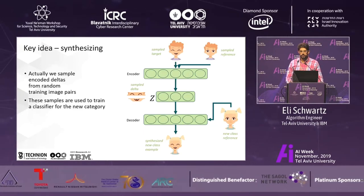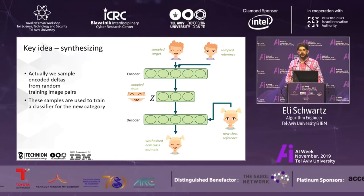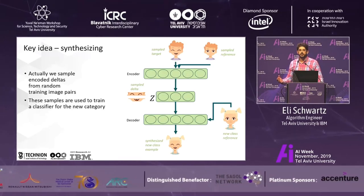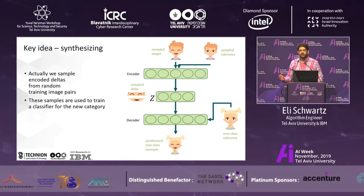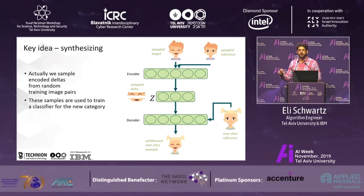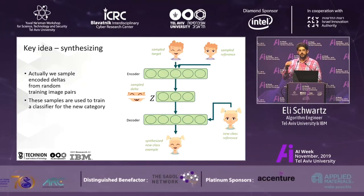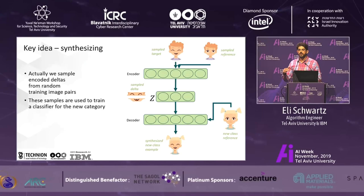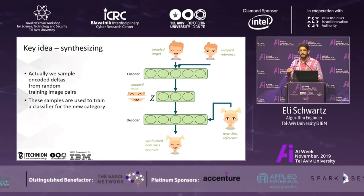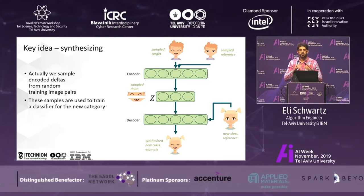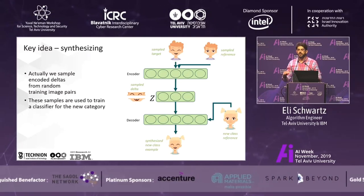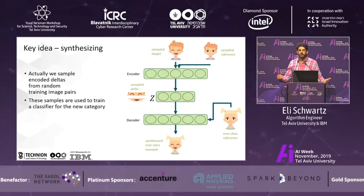Then we use all these generated samples to train a simple linear classifier. You can think of it as taking a ResNet, cutting the classifier head, and using this as an embedding model. In this embedding space, we augment the little data we have, and then re-train the linear classifier with the augmented data.